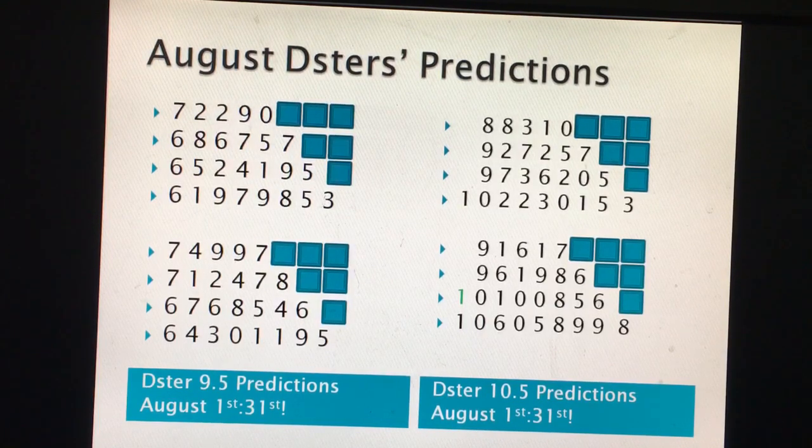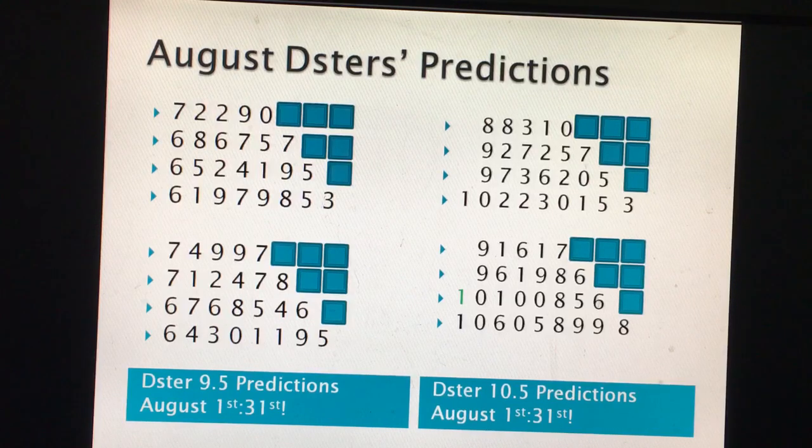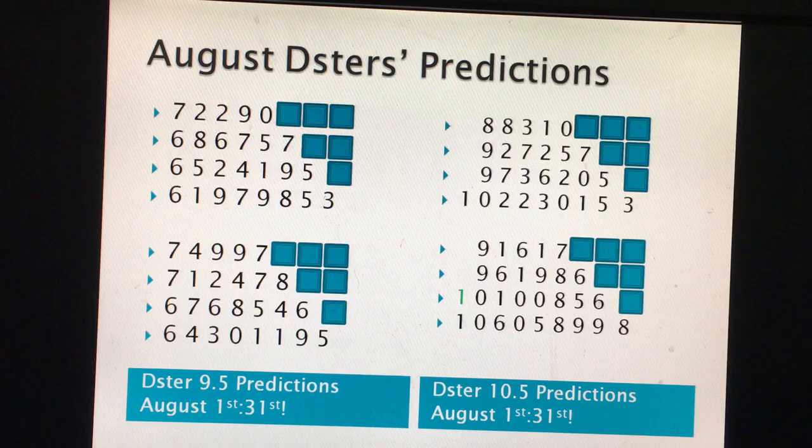This is the August D-Stir prediction chart using D-Stir 10.5 to predict the Mega Million winning numbers for the month of August.